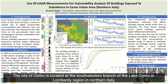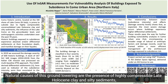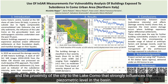The city of Como is located at the southwestern branch of Lake Como in the Lombardy region in Northern Italy. This area is known to be affected by subsidence at the rate of a few millimetres per year. Natural causes of this ground-lowering are the presence of highly compressible late Holocene clay and silty sediments, and the proximity of the city to Lake Como, which strongly influences the piezometric level in the basin.